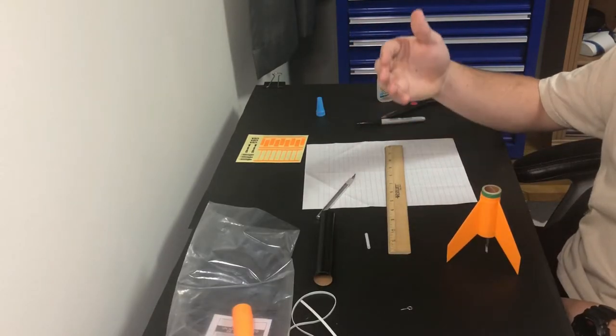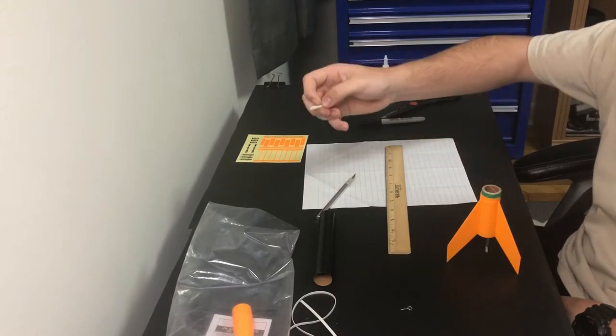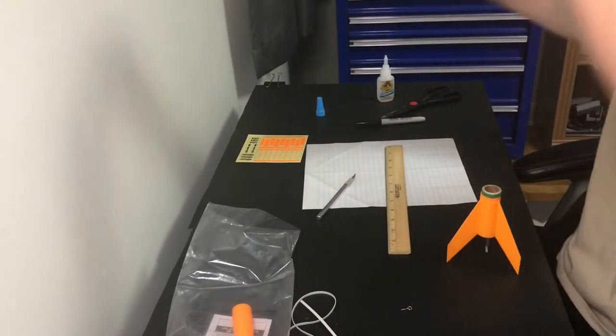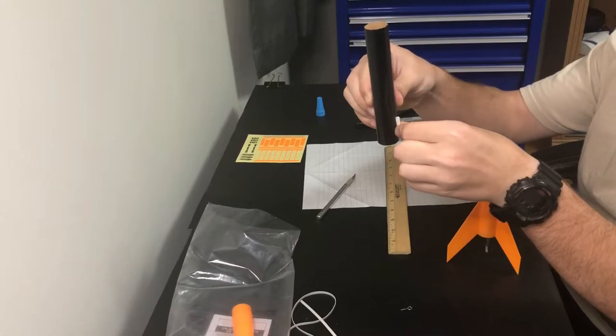Next we're going to be attaching this white piece to this black piece. This is where your rod that you launch it off of is going to be going through, straight up and down so that your rocket can go straight up. Glue it like that, just like this, all the way at the bottom.